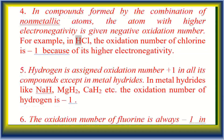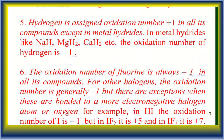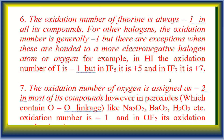Rule 5: Hydrogen is assigned oxidation number +1 in all its compounds except in metal hydrides. In metal hydrides like NaH, MgH₂, CaH₂ (sodium hydride, magnesium hydride, calcium hydride), the oxidation number of hydrogen is −1. When hydrogen is attached to a metal, its oxidation number is −1.